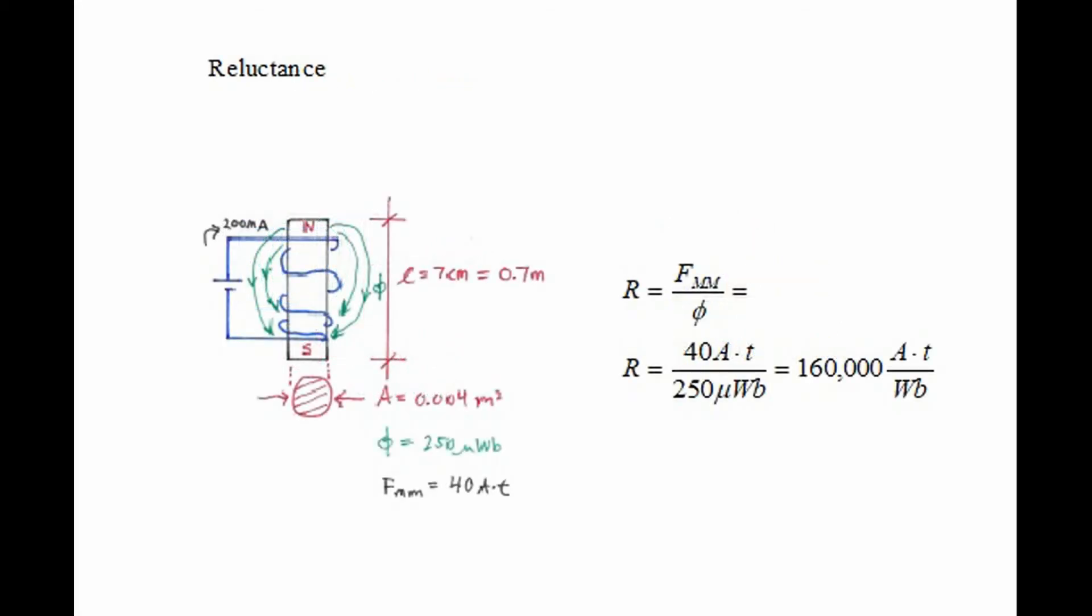When we first apply current to our windings wrapped around the iron, we find that the iron does not want to become magnetized. This opposition to magnetism is called reluctance and it's very similar to resistance in electricity. We can calculate reluctance by saying it is magnetomotive force divided by flux. In this case, 40 amp turns divided by 250 microwebers equals 160,000 amp turns per weber.